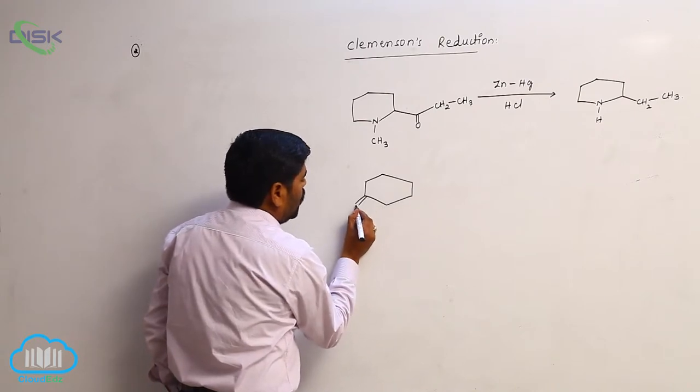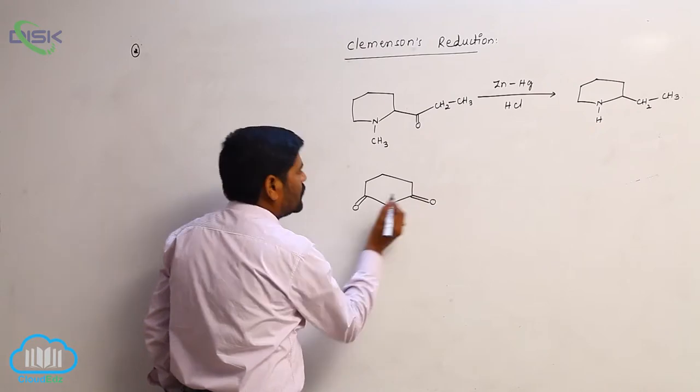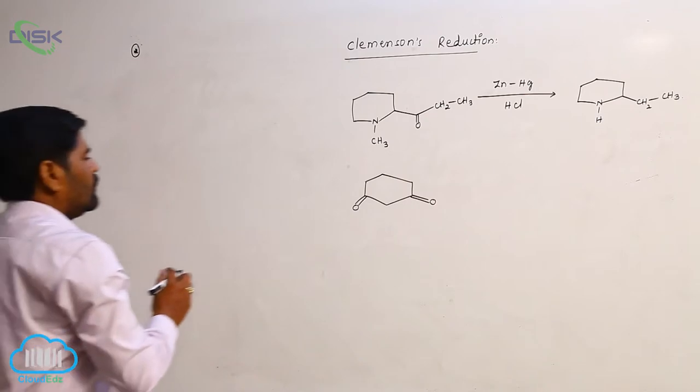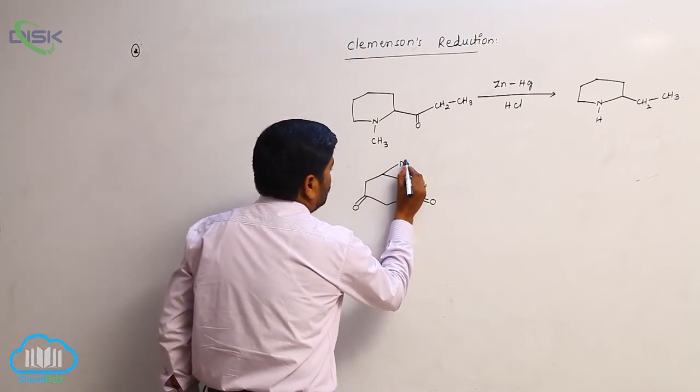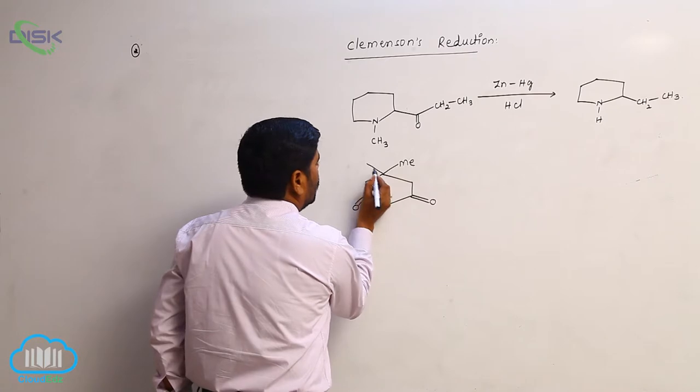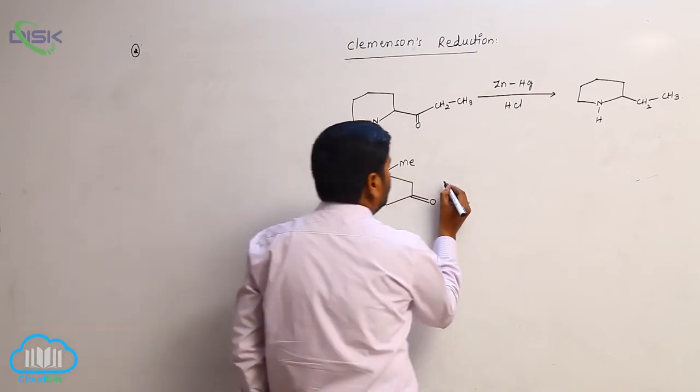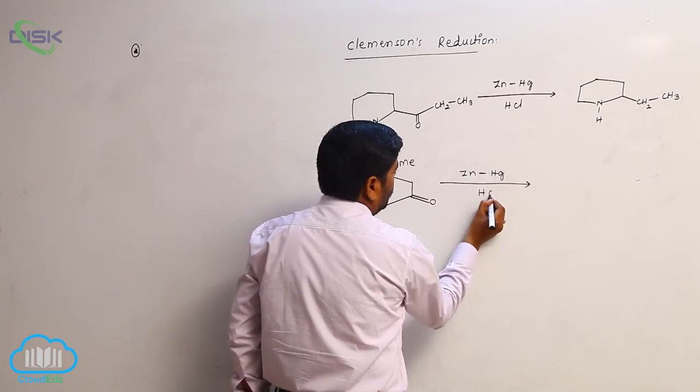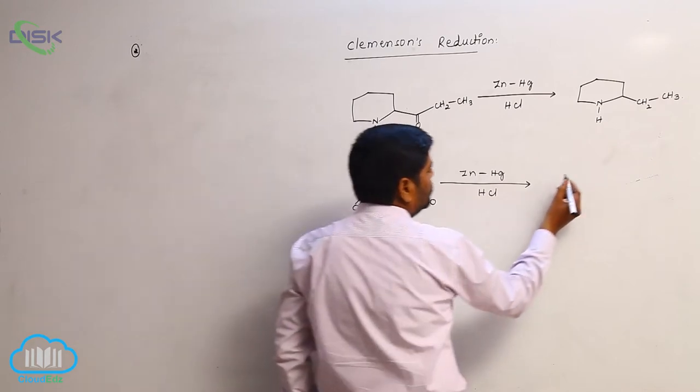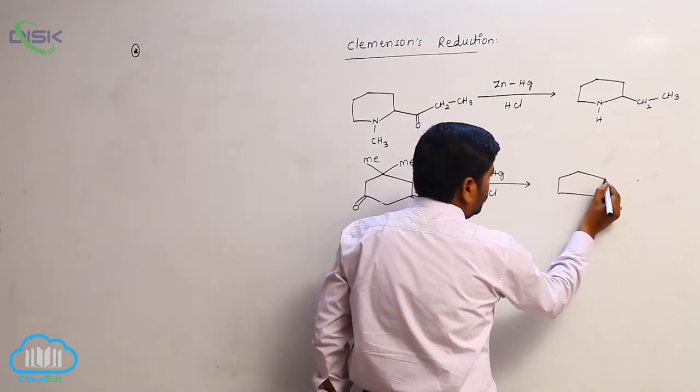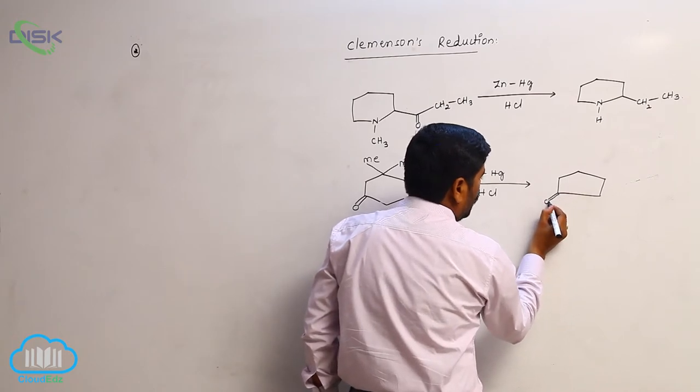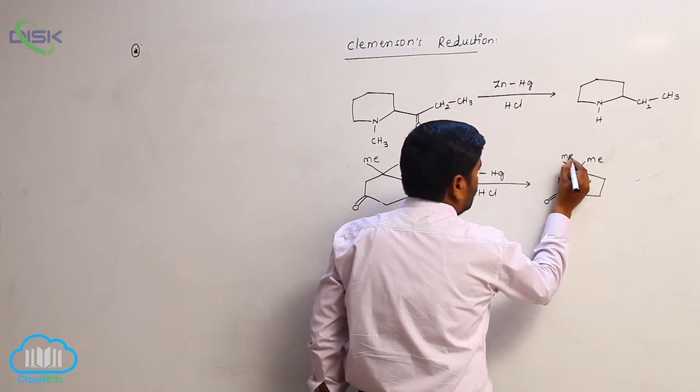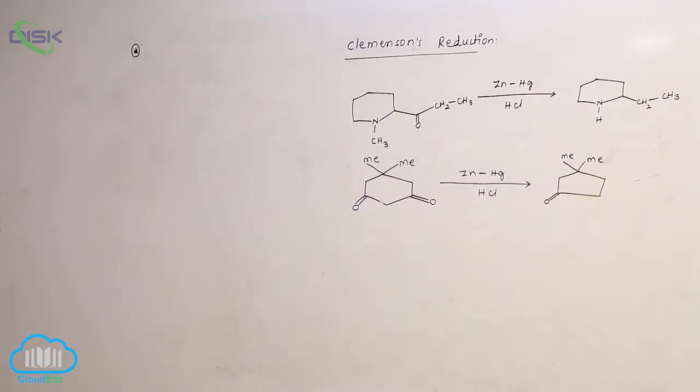Here is a keto group, this is methyl group, here is also methyl group. In presence of zinc amalgam and hydrochloric acid, double bond O, here is methyl group, then here is also methyl group.